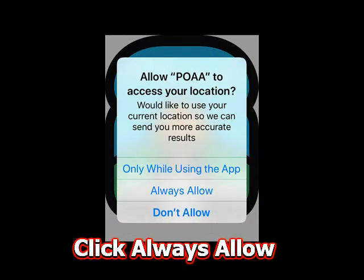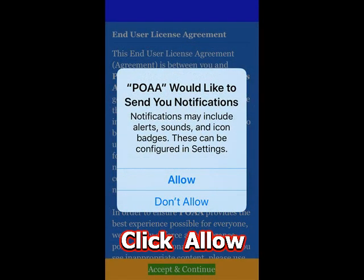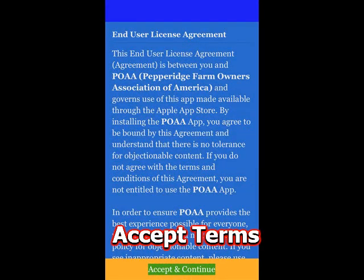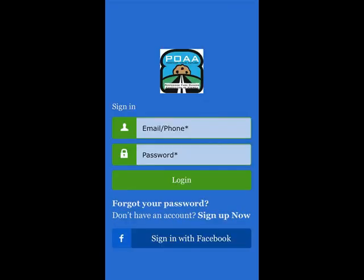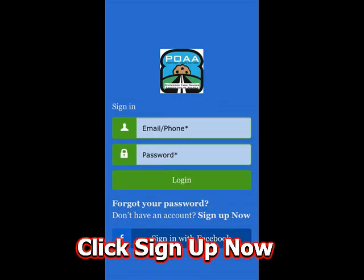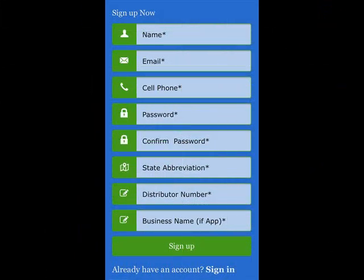Please press 'Always Allow' access to your location so you will receive geographical information which pertains to your region. Then click 'Allow' so POAA can send you notifications. You can always change these later. Once you agree to these terms, click on 'Sign Up' and complete the registration information. When finished, press 'Sign Up'.